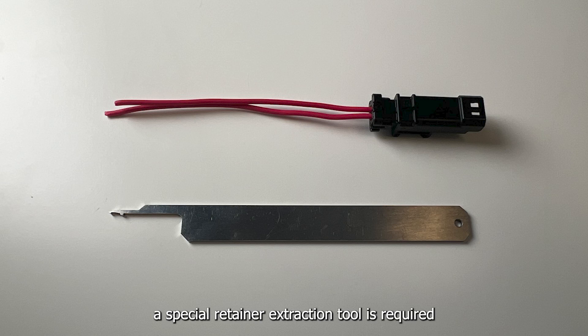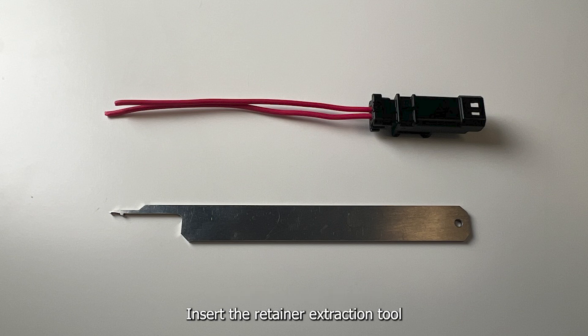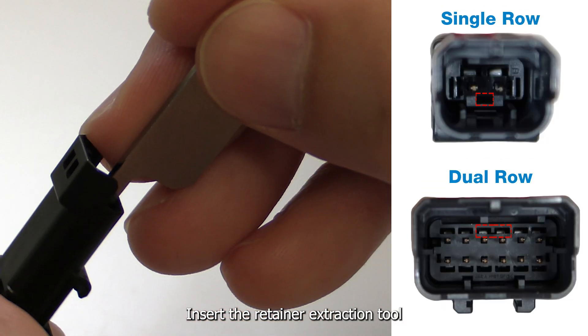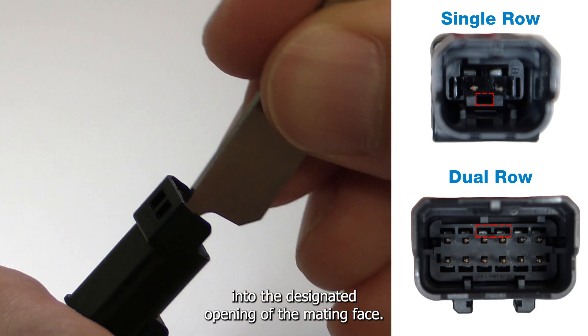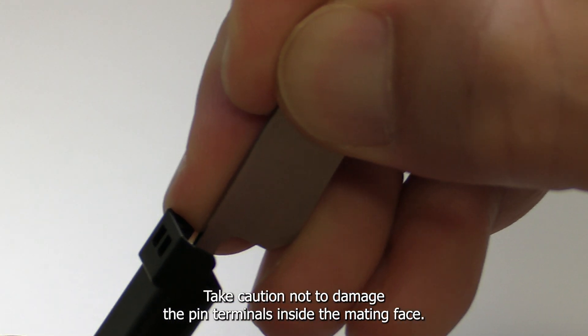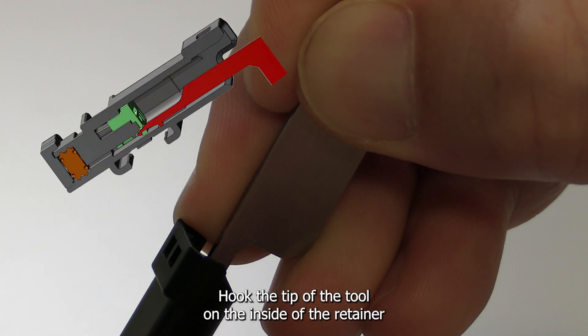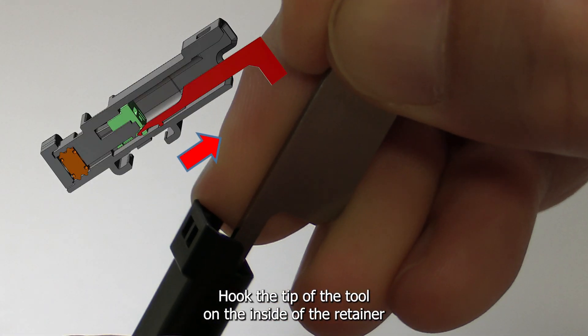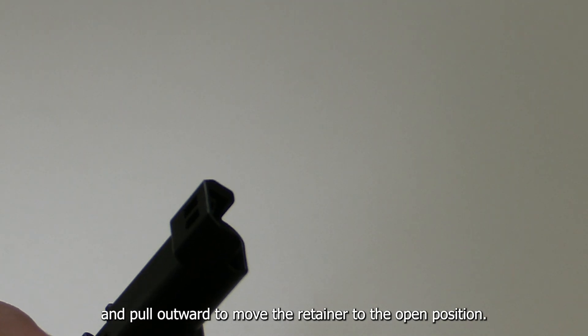For the pin connector, a special retainer extraction tool is required in order to pull the retainer into the open position. Insert the retainer extraction tool into the designated opening of the mating face. Take caution not to damage the pin terminals inside the mating face. Hook the tip of the tool on the inside of the retainer and pull outward to move the retainer to the open position.